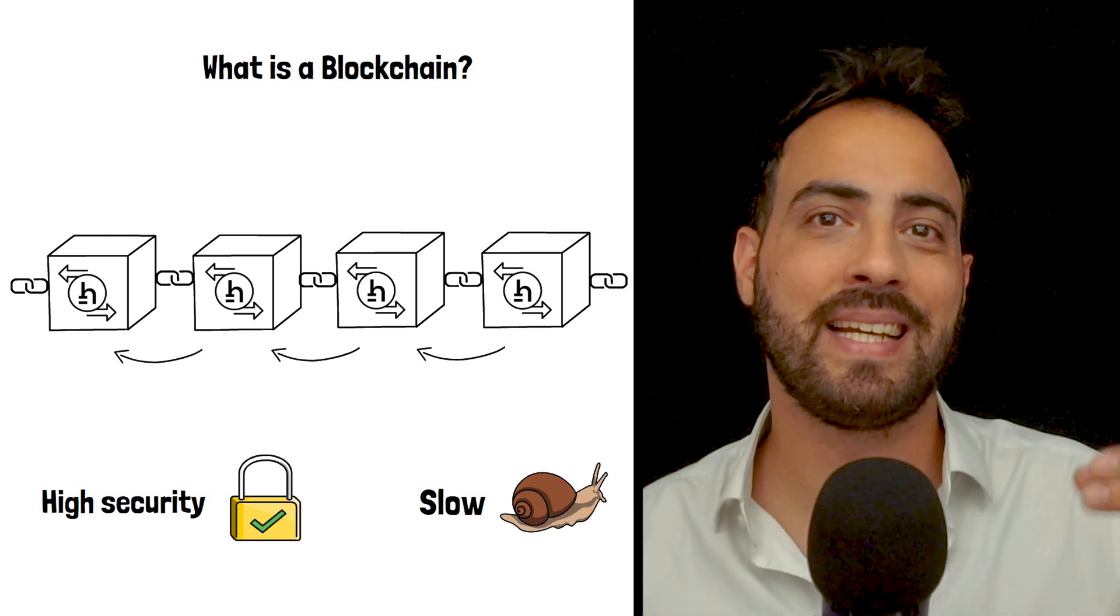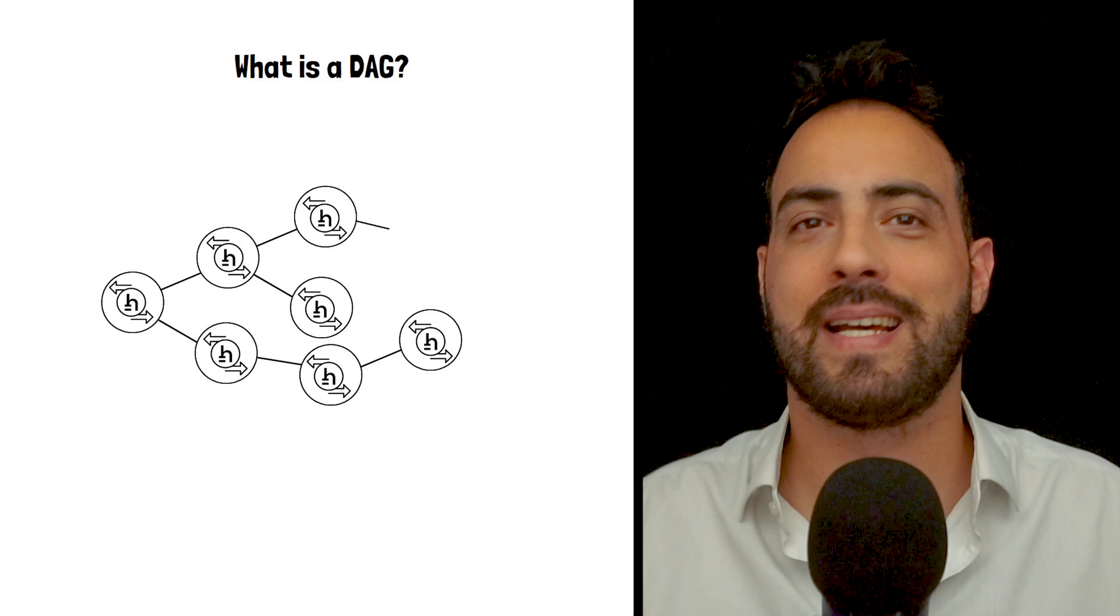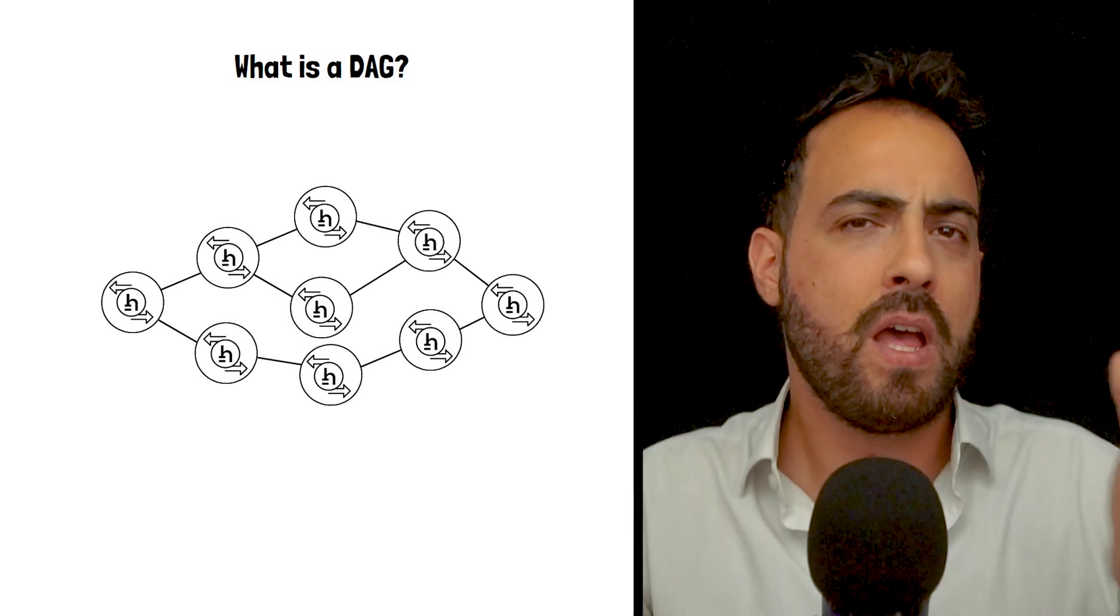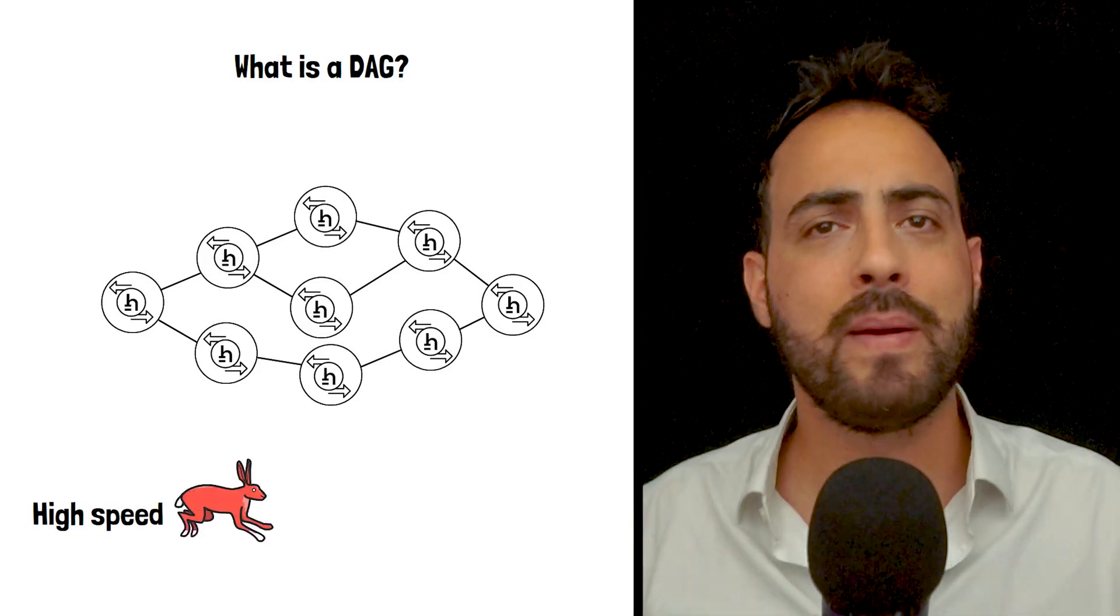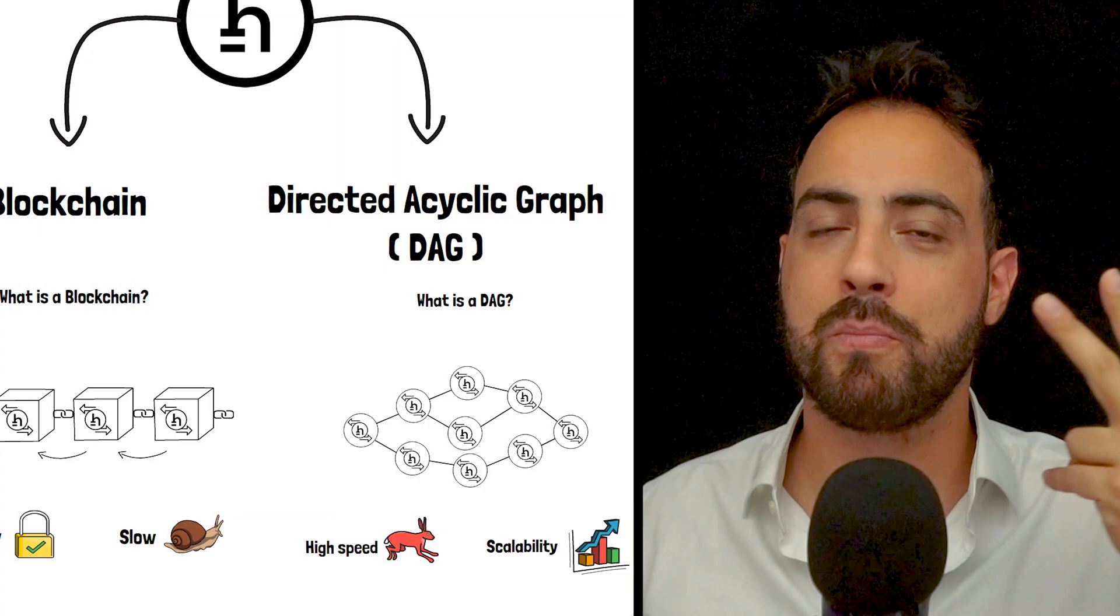On the other hand, a directed acyclic graph or DAG uses a web-like structure where individual transactions are directly linked to multiple previous transactions. This comes with higher speed and better scalability. Hathor is a hybrid platform that combines both technologies.